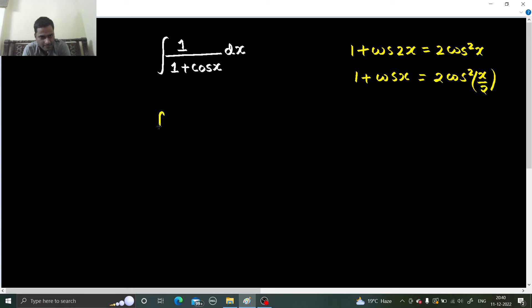Because if you rationalize this expression, so 1 divided by 1 plus cos x, if you multiply by 1 minus cos x in numerator and denominator...